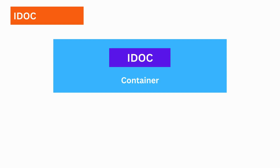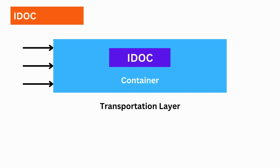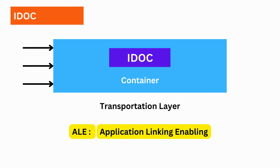As mentioned earlier, IDOC is just a data container. But to exchange information with other systems, it needs a transportation layer that handles transportation, monitoring, and performance. For this, we need ALE, which is a proprietary SAP technology. ALE stands for Application Linking and Enabling. We can create and run distributed applications using ALE, which supports loosely coupled integrations.